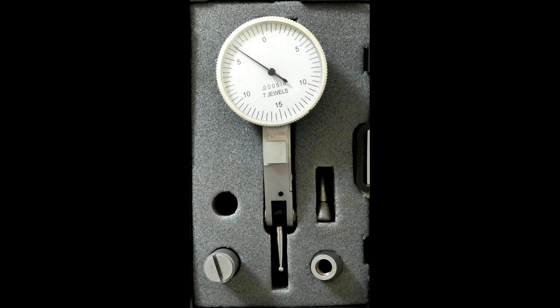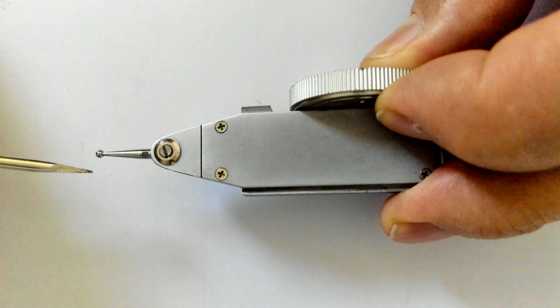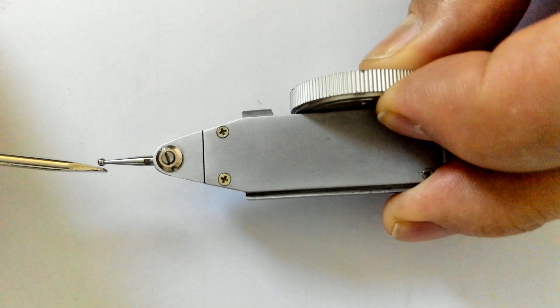Dovetail dial indicators. Instead of moving up and down, the dial plunger moves left and right or forwards and backwards depending on the viewing angle.